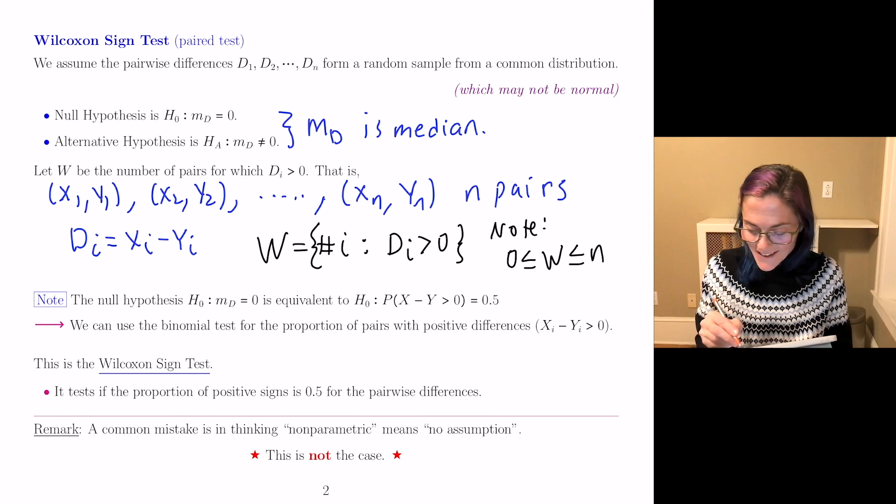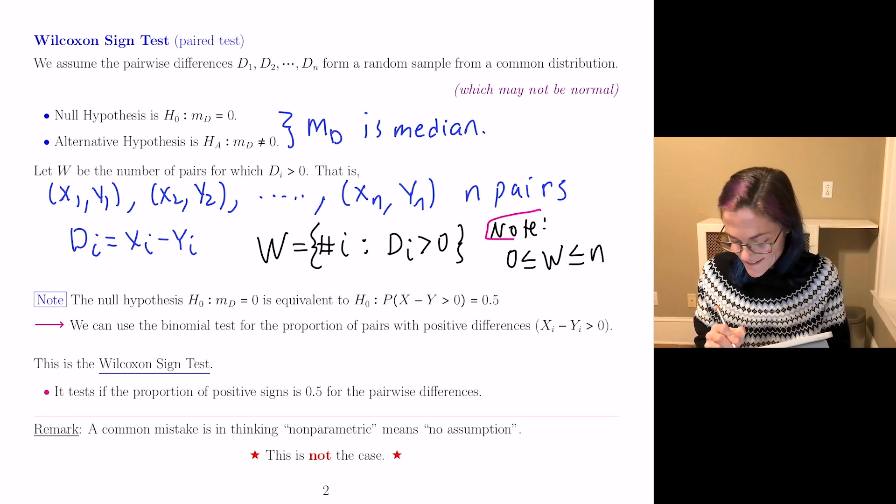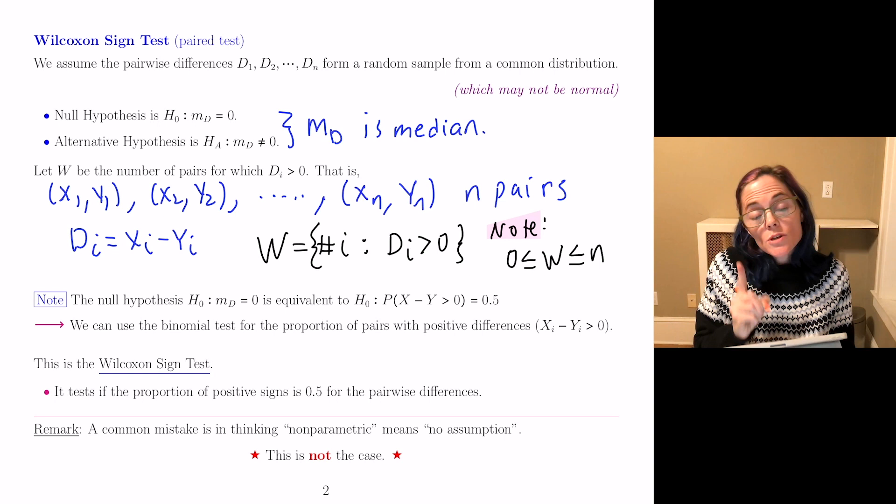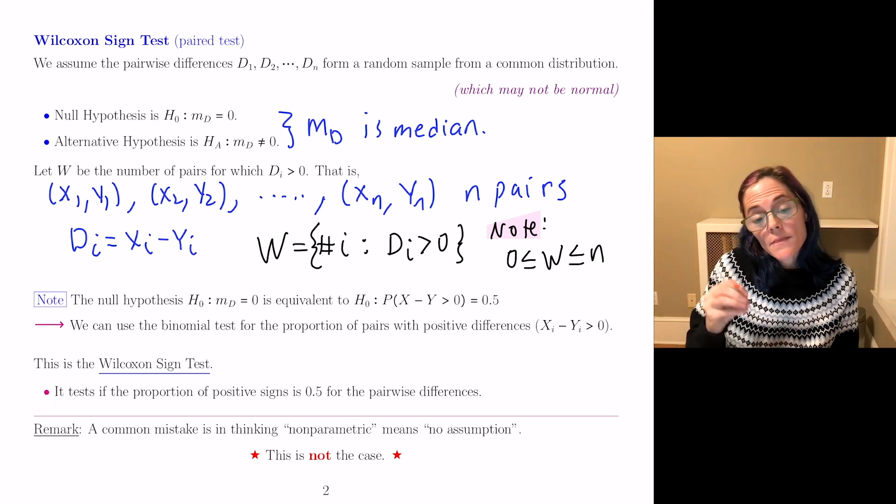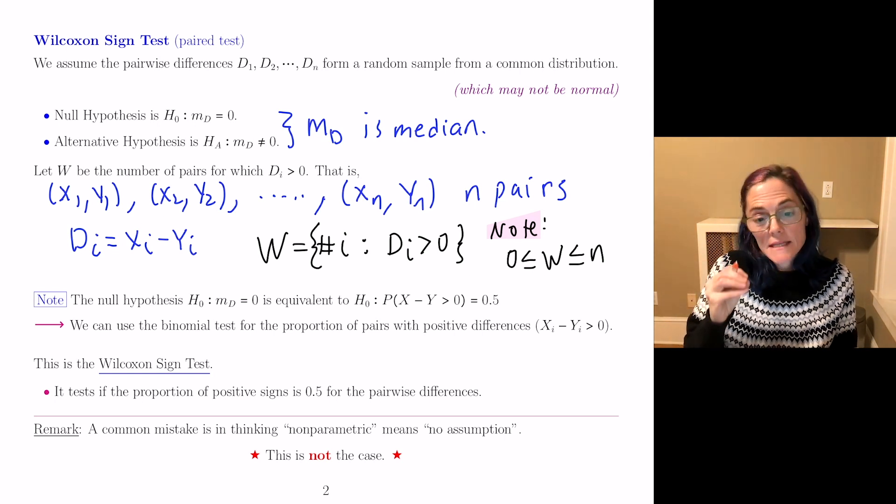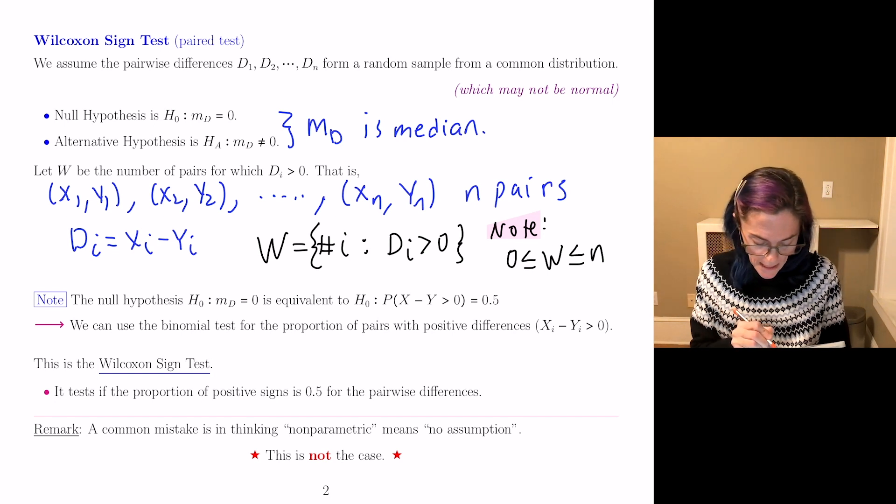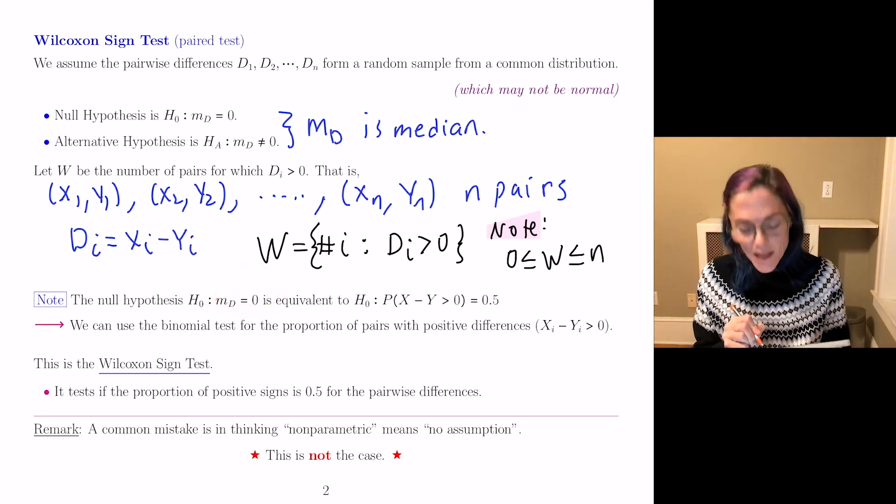Now, my other note I have written, that this null hypothesis, that the median of the D's equals zero is equivalent to saying the following,